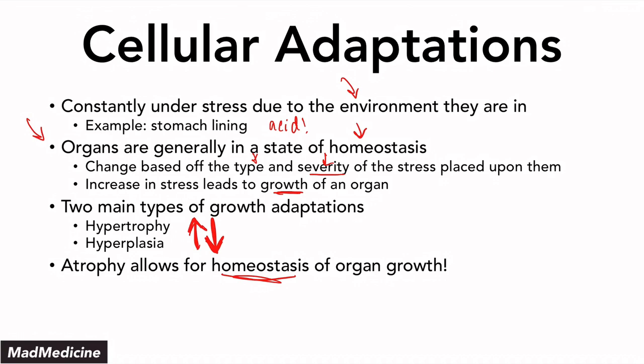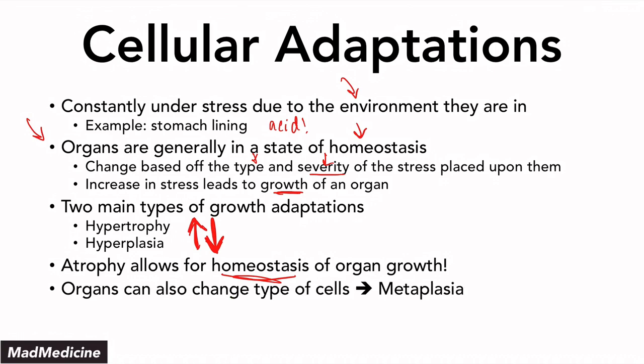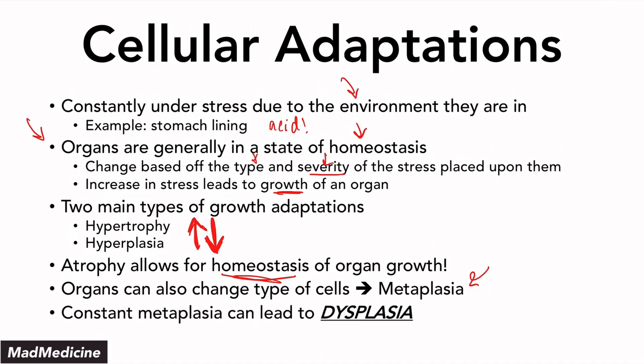What happens if the stress is not gone? If there's too much stress or if the stress is not removed, that organ can change the type of cells it has to better adapt to the stressful environment — and that is a type of cellular adaptation called metaplasia. That is what happens when a differentiated cell becomes a different type of differentiated cell, better suited for that stressful environment. Metaplasia is actually reversible — that is a key factor. If you remove the stressful situation, the metaplasia will resolve and the tissue will go back to its normal state.